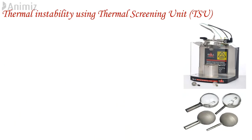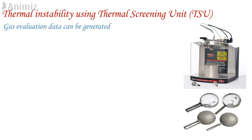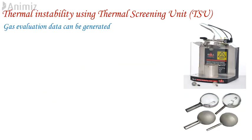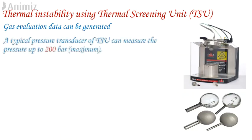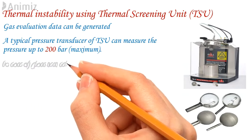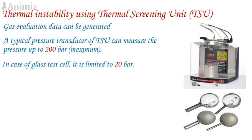Advantage of TSU over DSC: by using TSU, gas evolution data can be measured. A pressure transducer is connected and it records the pressure data constantly throughout the entire experiment. A typical pressure transducer of TSU can measure pressure up to 200 bar maximum. In the case of a glass test cell, it is limited to 20 bar.